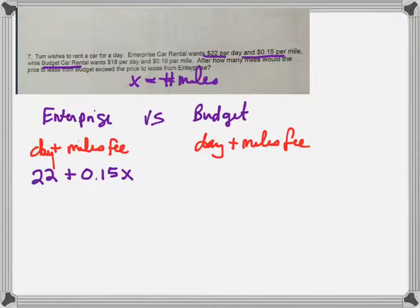So I'm going to do the same thing for Budget. They told me that Budget is $18 a day and then 19 cents per mile.